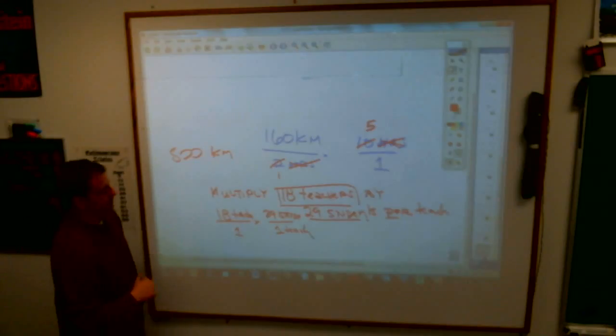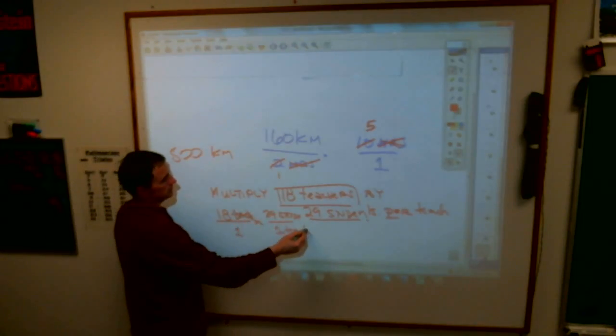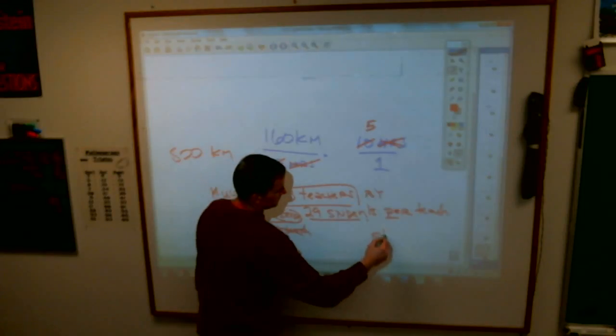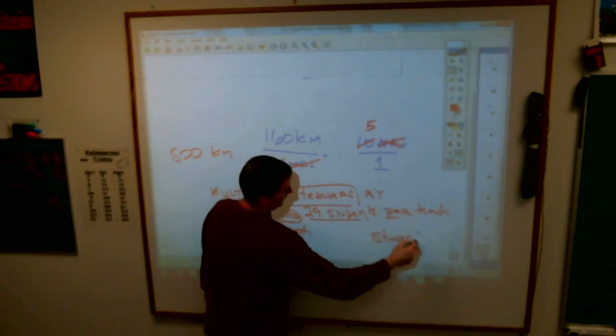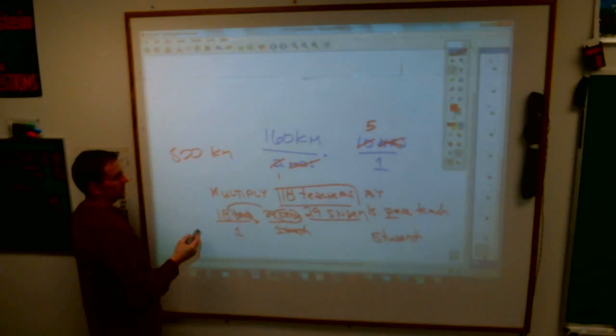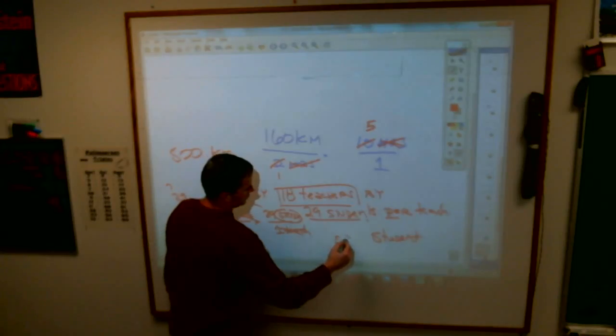So what's going to cross off? All teachers do. My label left is students. And then I just multiply it 18 times 29, which happens to be what? 522 students.